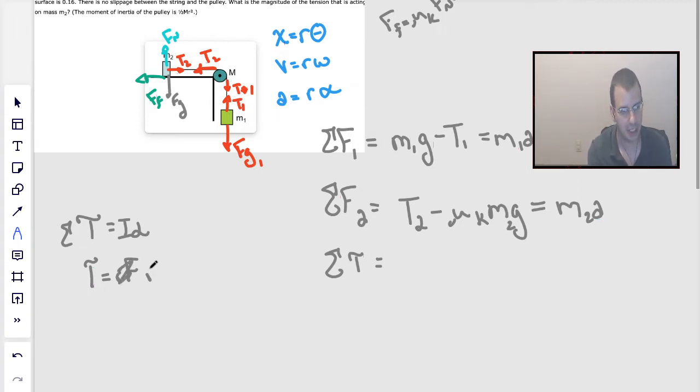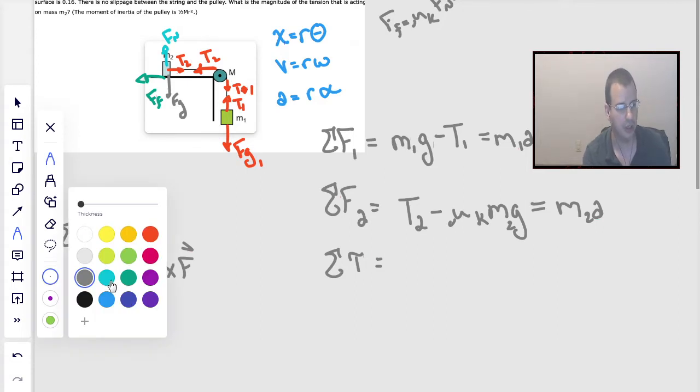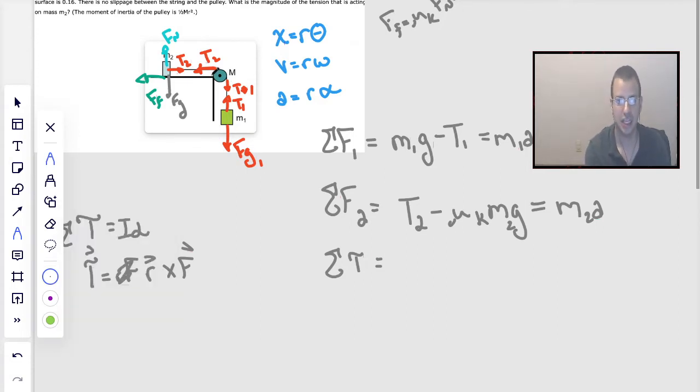These should actually be R cross F—these are vectors. The cross product is a measure of how perpendicular two vectors are. Since the radius is perpendicular to the tension, which is either straight down or straight horizontal, that's going to be perfectly perpendicular. So in this case it's just going to be RF, or specifically radius times tension.